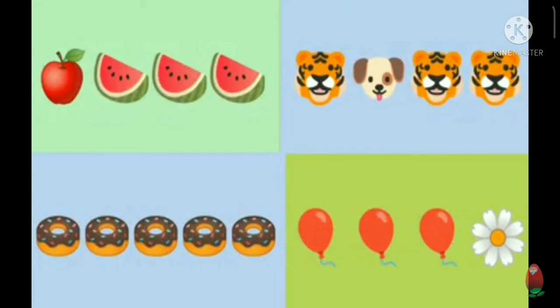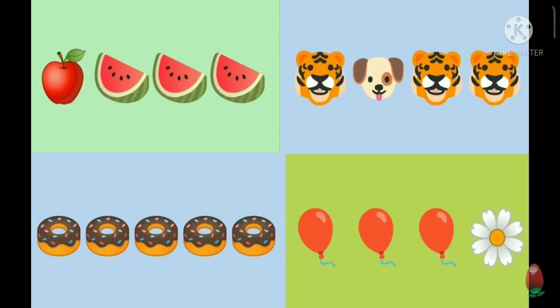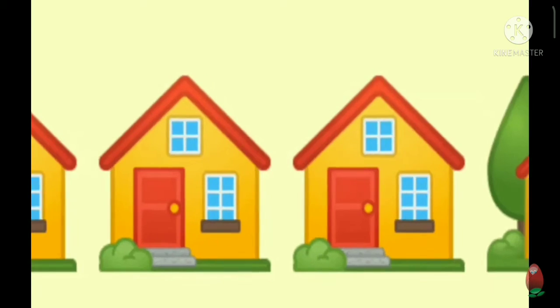So if you find the pictures are same in color, size, and shape, that means they are same. Jodi tomra dekho pictures color, size are shape aki tahole tada same mane aki, like this picture. If not, that means they are different, like this picture.